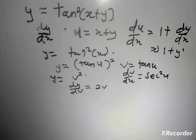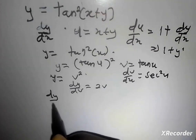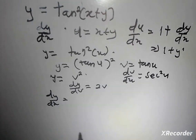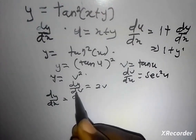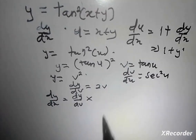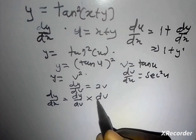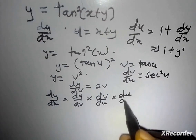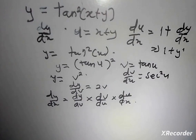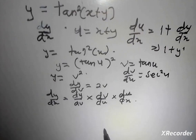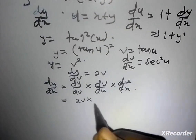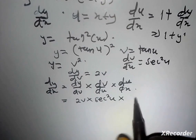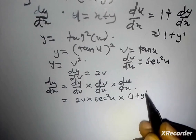I'm going to make my substitutions. By the chain rule, dy/dx equals dy/dv multiplied by dv/du multiplied by du/dx — this is my three-layer chain rule. So dy/dv gives 2v, times dv/du giving sec squared u, times du/dx which gave me 1 plus y prime.